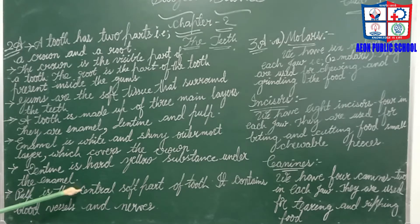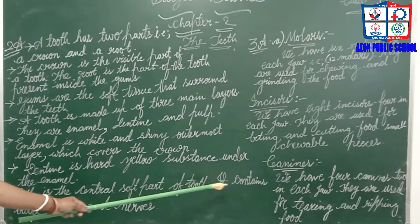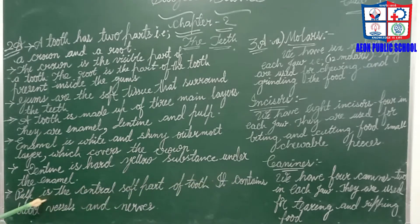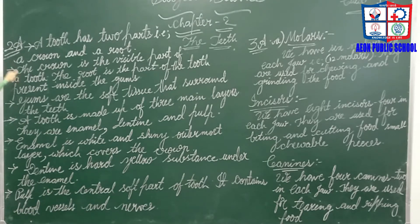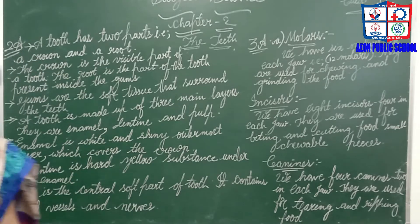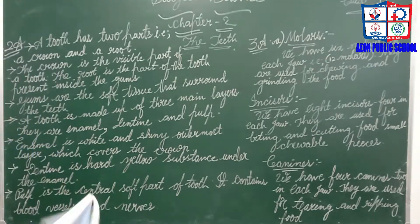Pulp is the central soft part of the tooth. It contains blood vessels and nerves. Each part has been explained one after another, and by this we have completed our second answer.